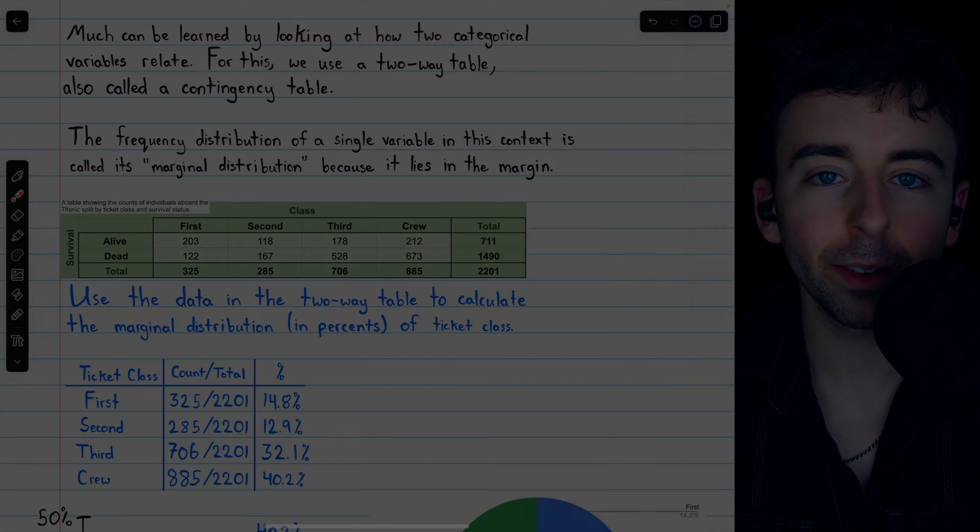That's my freehand relative frequency bar chart for the marginal distribution, which we were able to figure out from this two-way table. Sometimes people also like to put the actual counts or percentages directly above the bars — that's particularly nice when hand drawn, as the actual percentages can help make up for any deficiencies in freehand measurements. The bar chart is a great option by hand, but you could also use a pie chart, and this is what that would look like for this marginal distribution of ticket class.